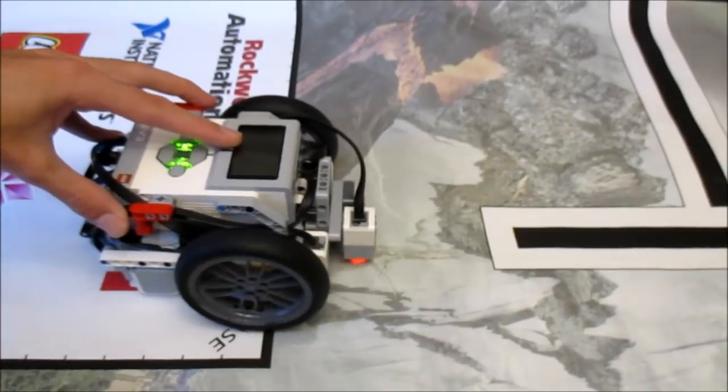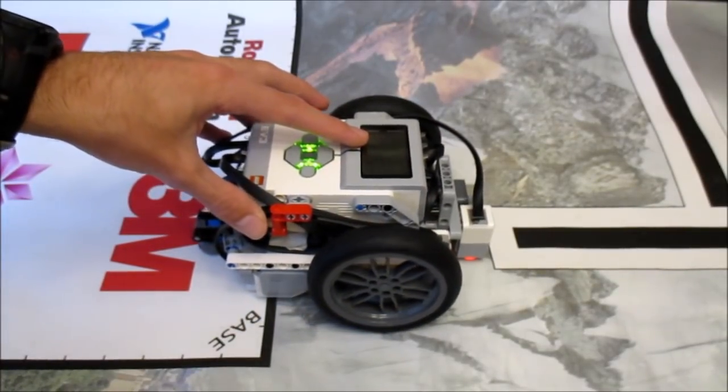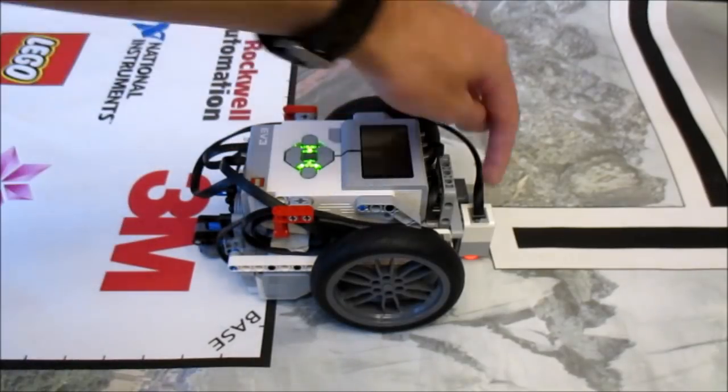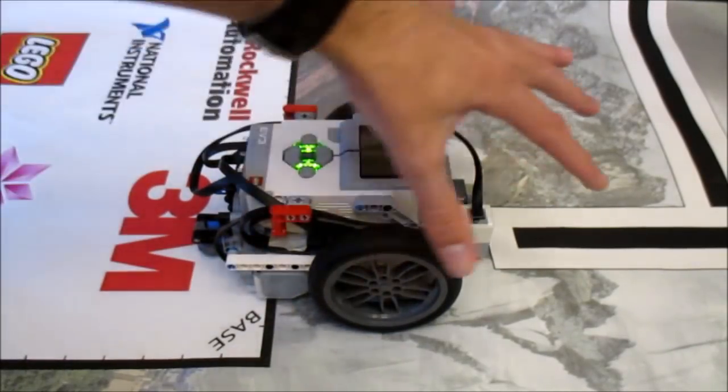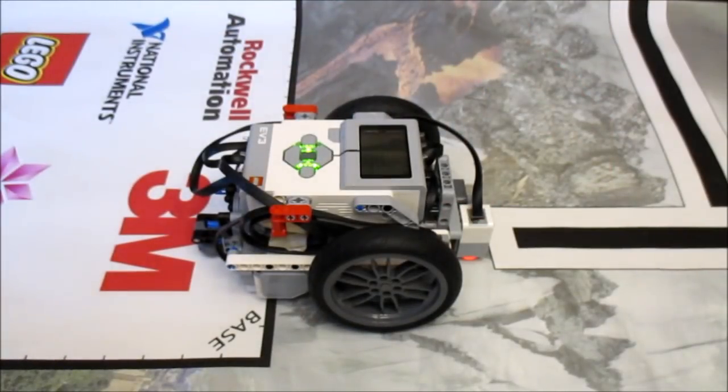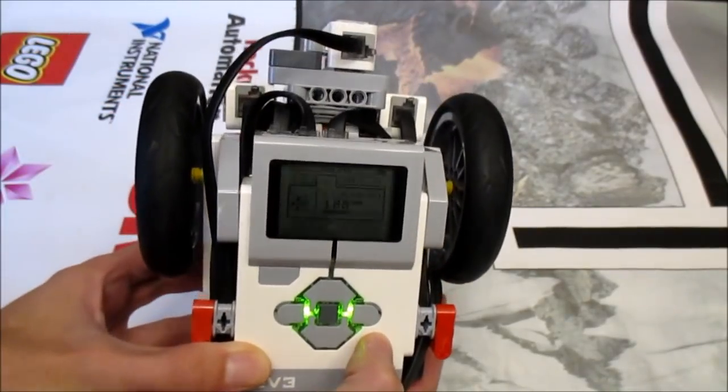We're going to gently roll the robot forward and measure the distance it takes to get just before the line. So right here you see my color sensor is not quite over the line but it's past the majority of this area here, and I'll explain why that is in a second.